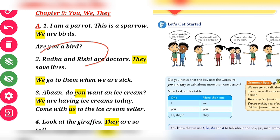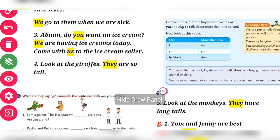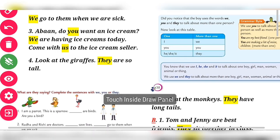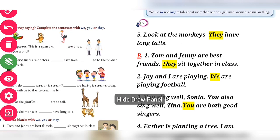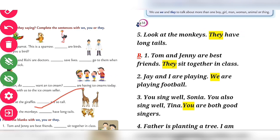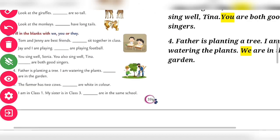Number two: Radha and Rishi are doctors, so we use 'they' for these two names. 'They go to them when we are sick.' Next, Aban says, 'Do you want an ice cream? We are having ice cream today, come with us to the ice cream parlour.' Number four: Look at the giraffes — giraffes is plural, so 'They are tall.' Number five: Look at the monkeys — 'They have longer tails.'